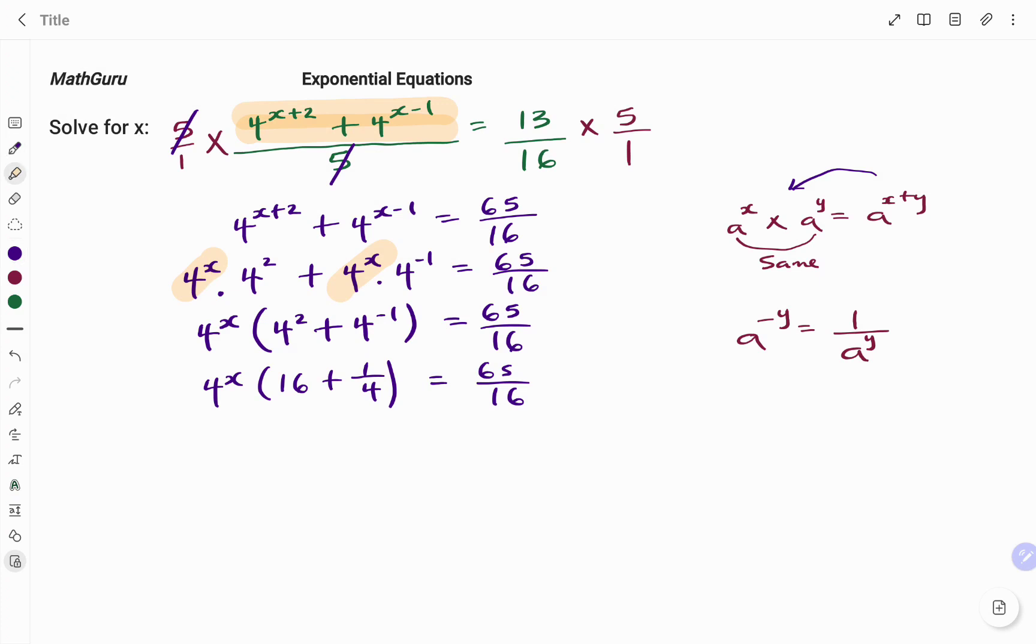The next step, I need to solve the fraction in the bracket and that will give me 4 to the power of x multiplying 65 over 4 equals 65 over 16.